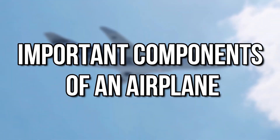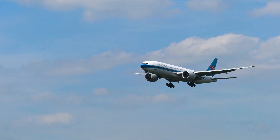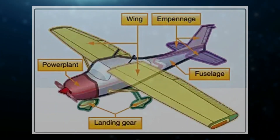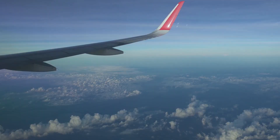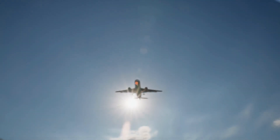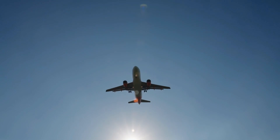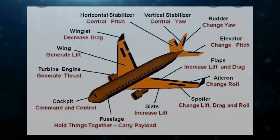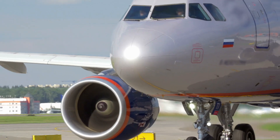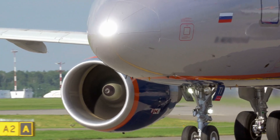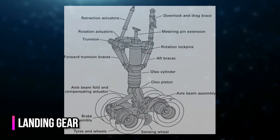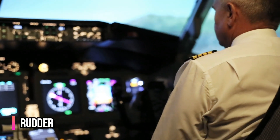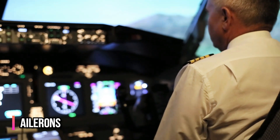Now let's talk about the important components of an airplane. There are many different parts that make up an airplane, but the main ones are the wings, fuselage, engines, landing gear, and control surfaces. The wings are the most important part of the airplane as they provide lift and support the weight of the aircraft. The fuselage houses the cockpit, passenger cabin, and cargo hold. The engines provide the thrust needed to propel the airplane forward, and the landing gear allows the airplane to take off and land safely. Finally, the control surfaces—elevator, rudder, and ailerons—are used by the pilot to maneuver the airplane.